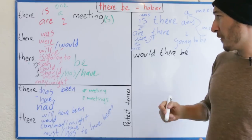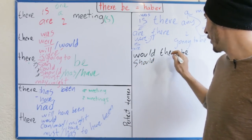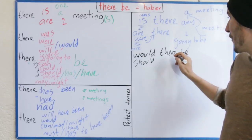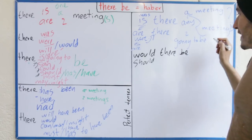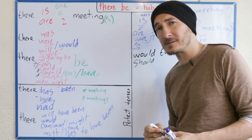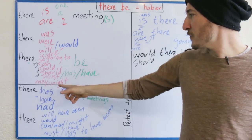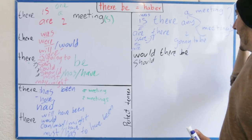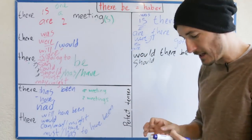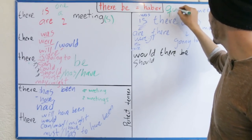Should there be a meeting? ¿Debería haber una reunión? Should there be any meetings? ¿Debería haber reuniones este mes? Should there be any meetings this month? ¿Debe haber reuniones este mes? Must there be any meetings this month? It's just the same. Esto sería para las preguntas.